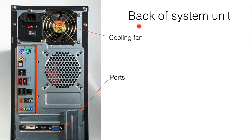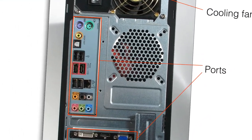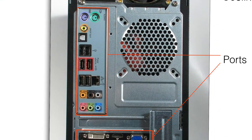Let's look at the back of the system unit. This is the cooling fan, this is the power socket, and these are all the ports. Let's zoom in to get a better view of the ports. These ports are used to connect to different computer devices, and we will talk about these ports one by one.